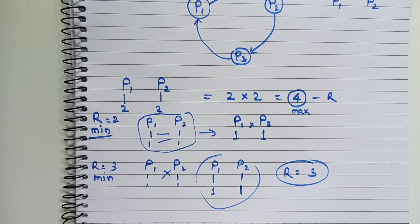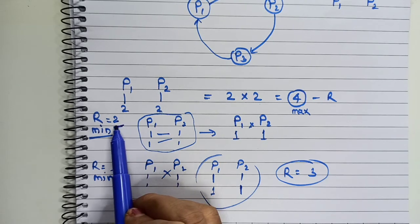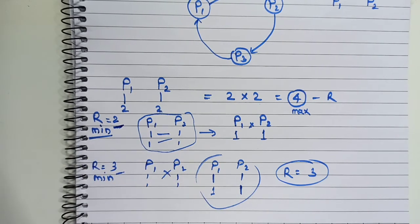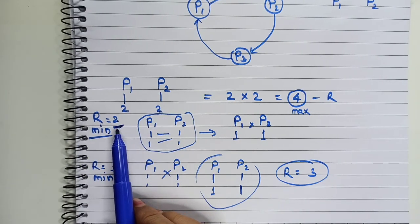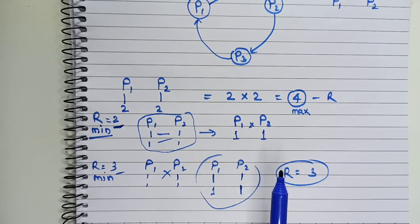One more question that can be asked: what is the maximum number of instances of resource type R that may lead to deadlock? The answer is 2, because with R=3 deadlock does not occur. So 2 is the maximum number of instances that may lead to deadlock. Read the question very carefully — it makes a big difference whether it asks for minimum to avoid or maximum that may lead to deadlock.